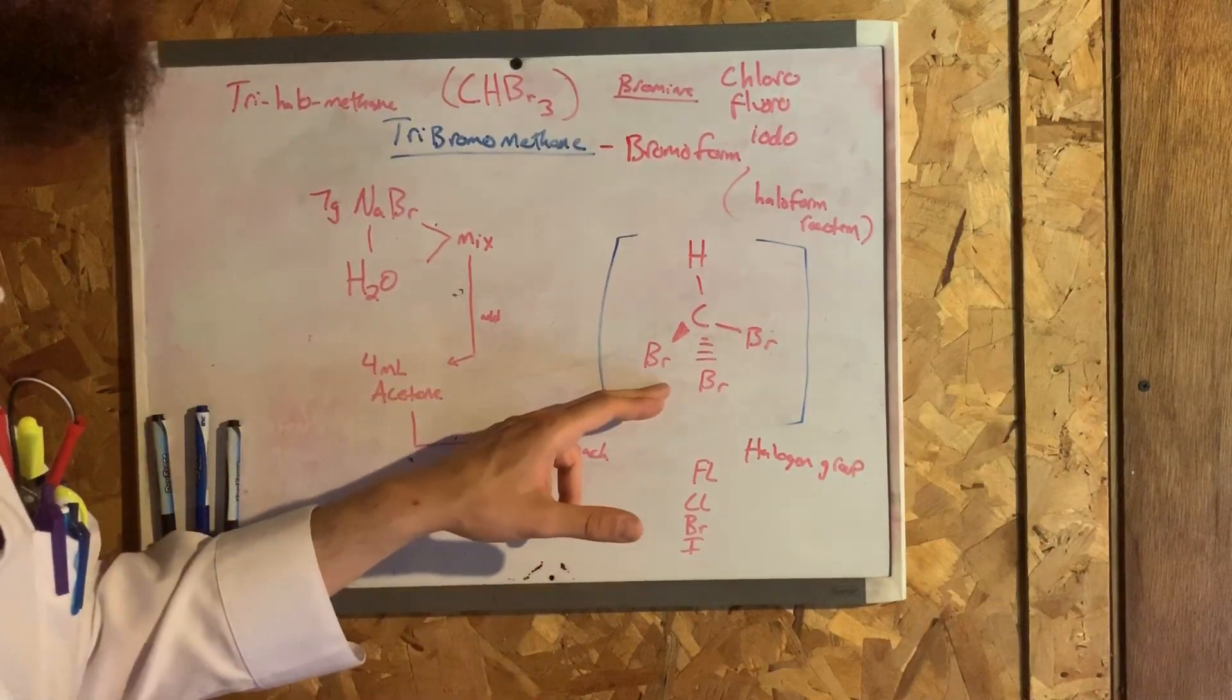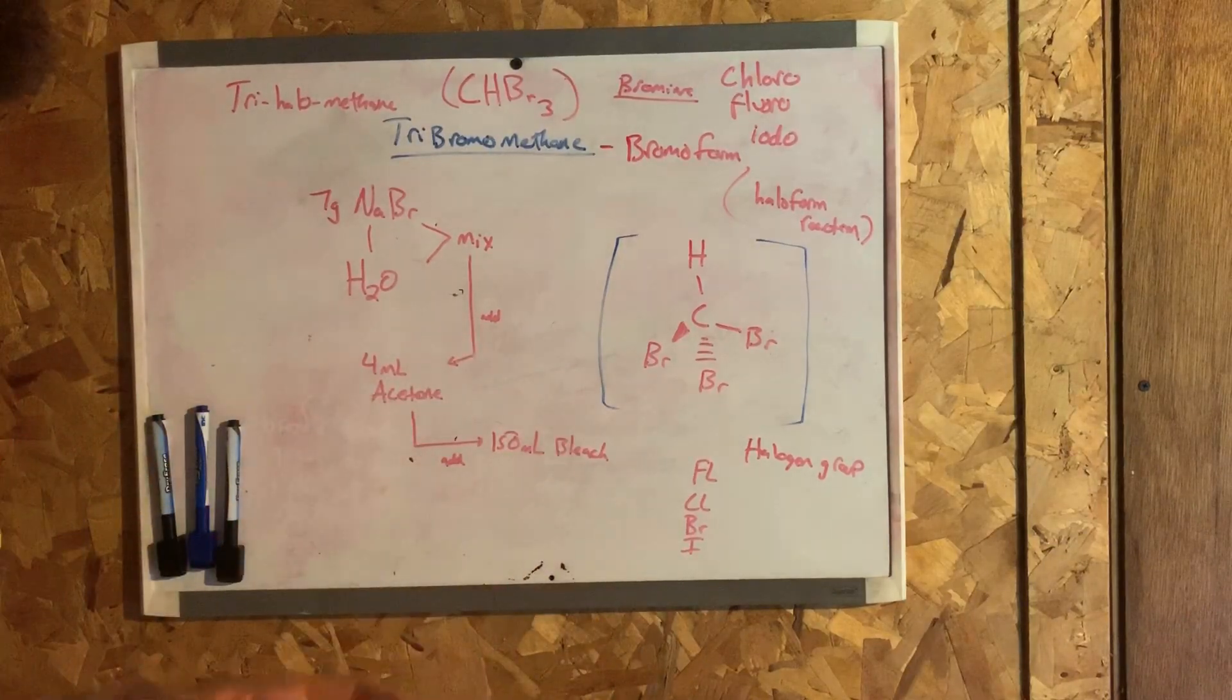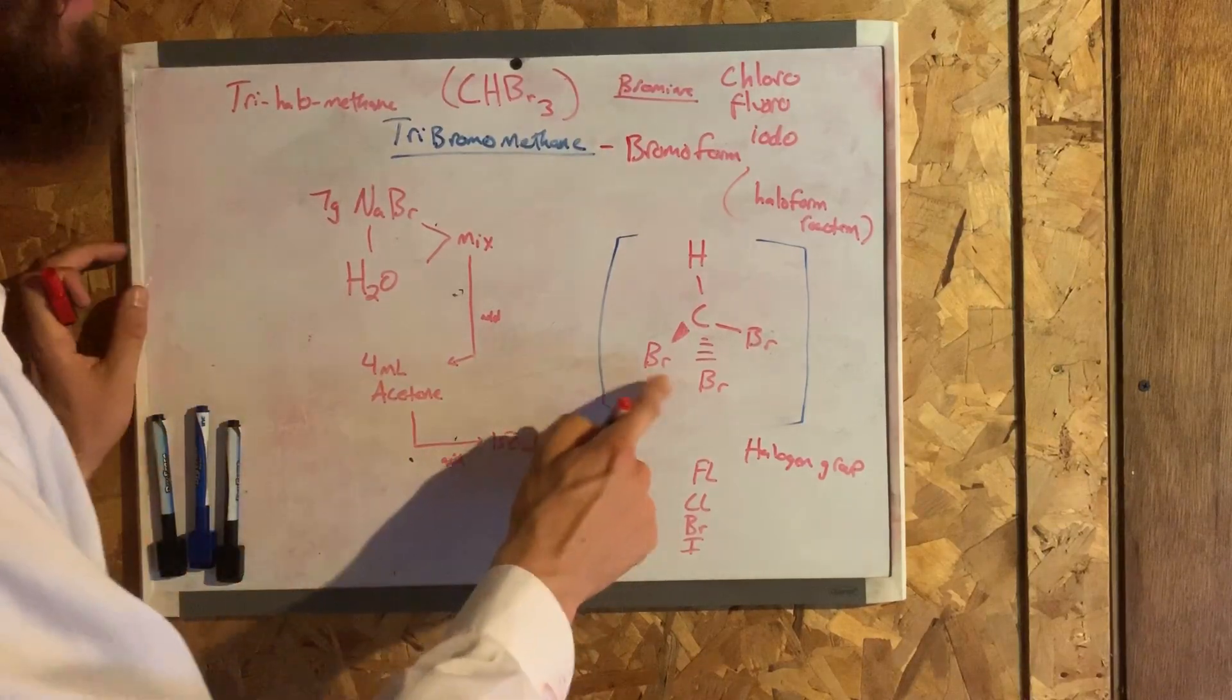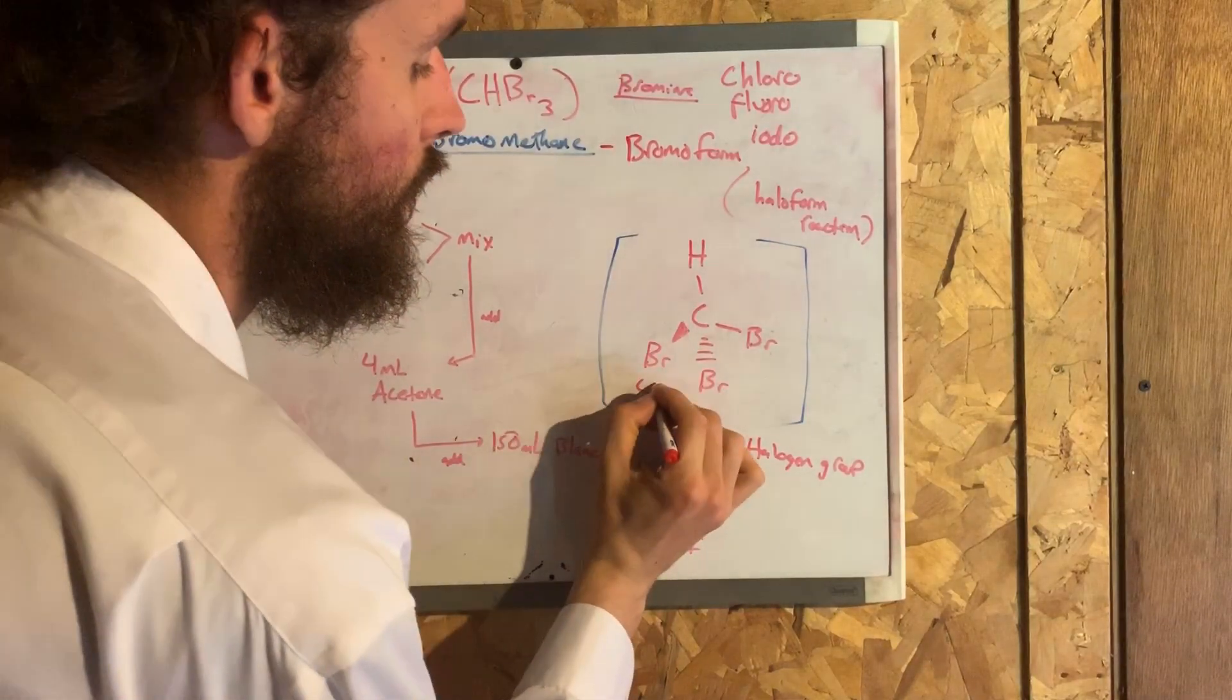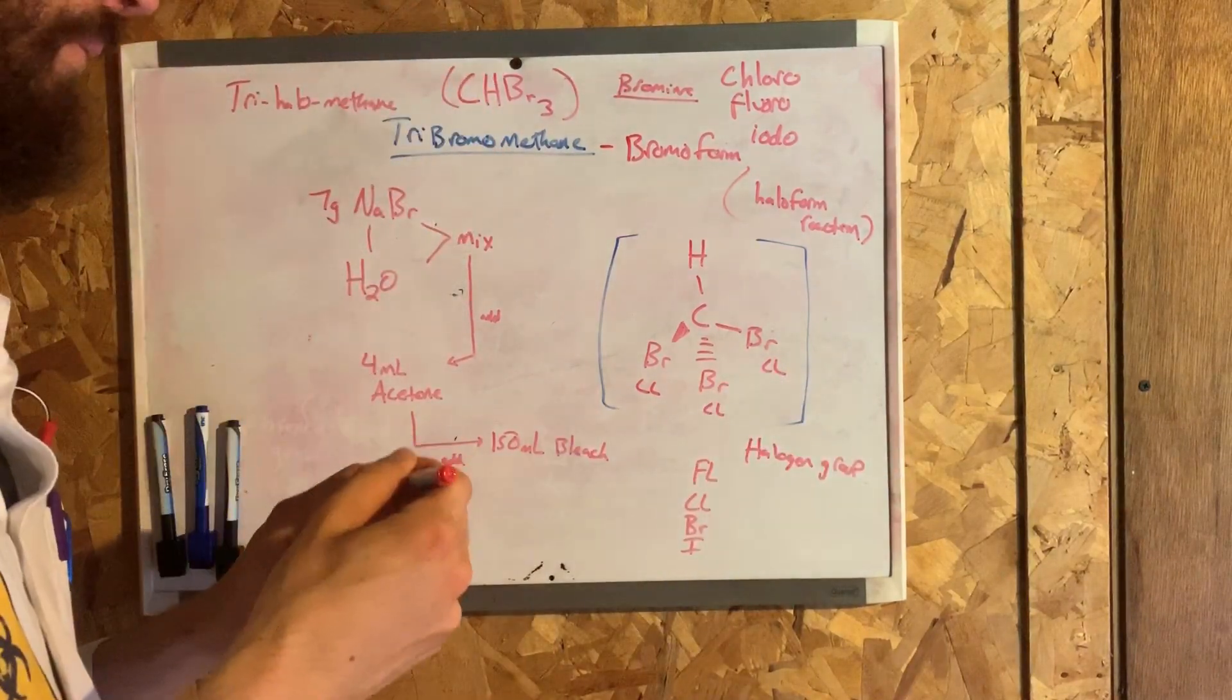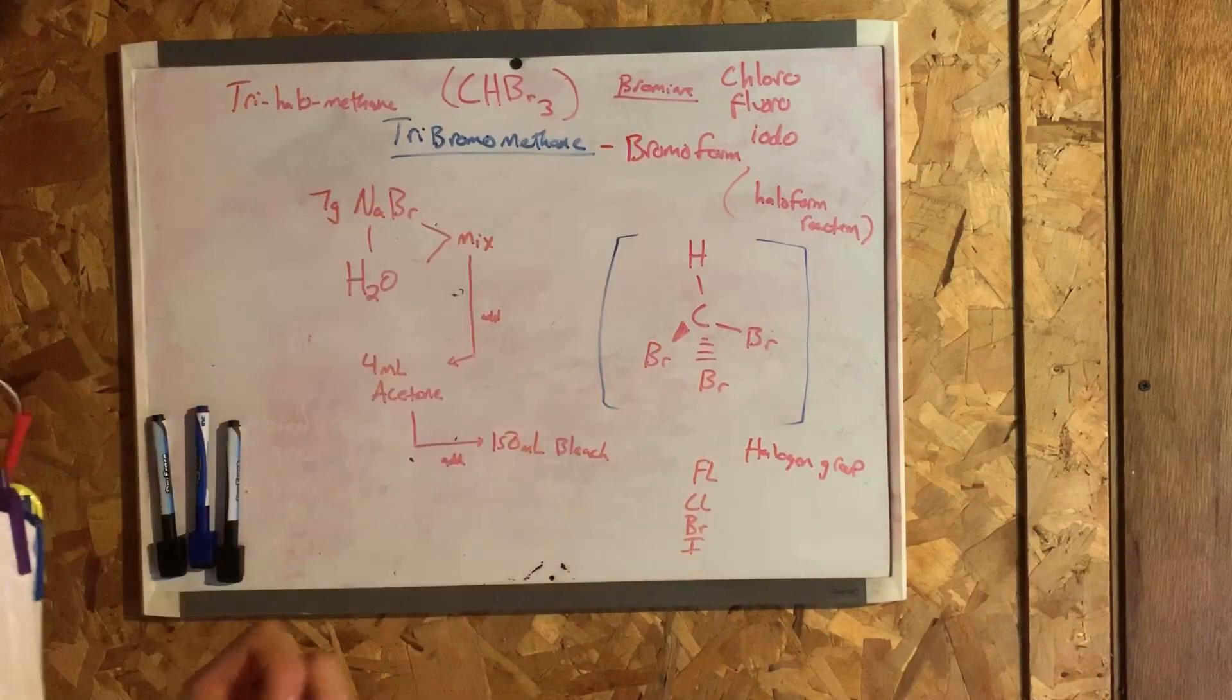Now this molecule, which is also known as bromoform, is very similar in appearance to chloroform. The only difference is chloroform, instead of having the bromine atoms here, it has chlorine atoms here. But we're not going to create chloroform, we're going to create bromoform.